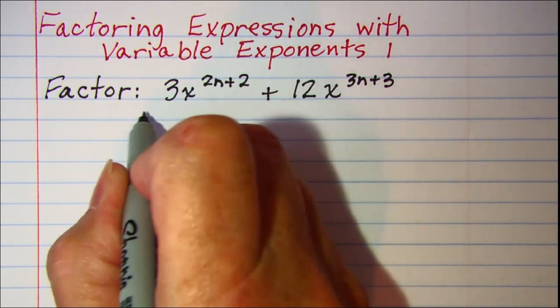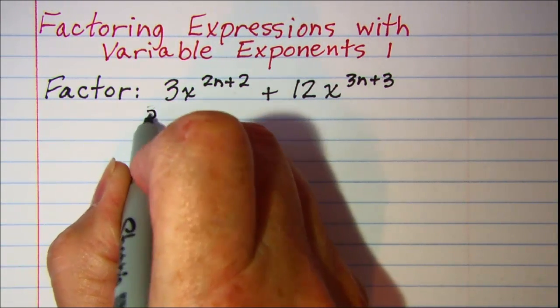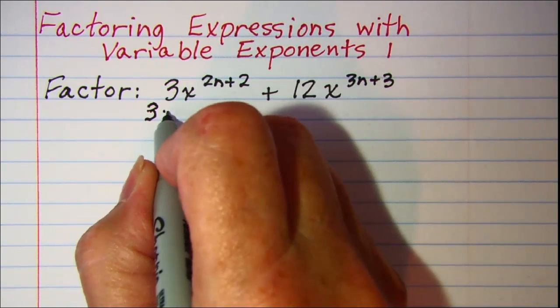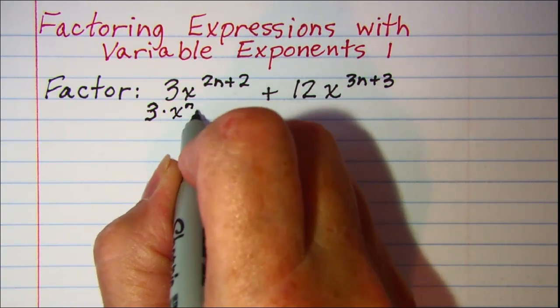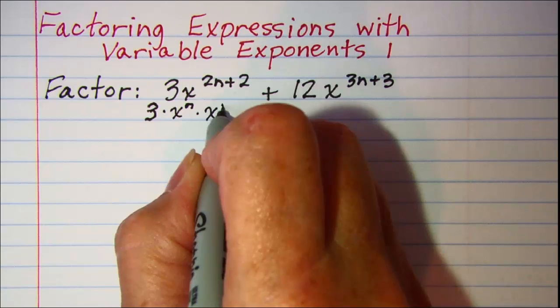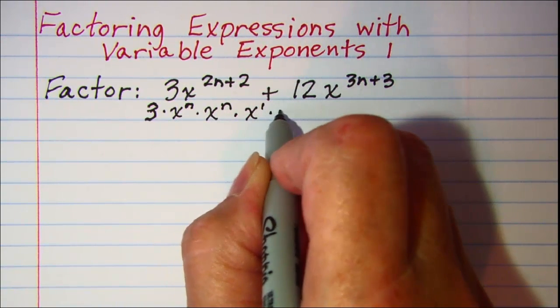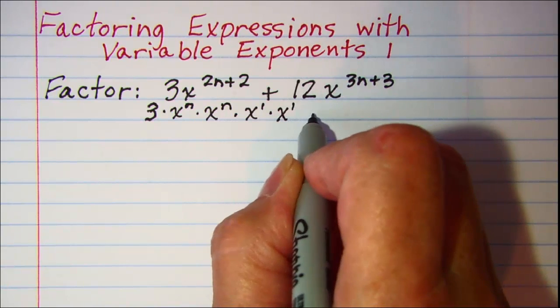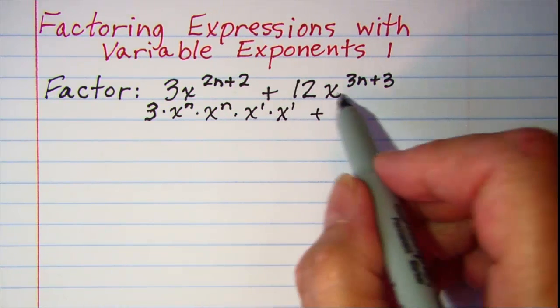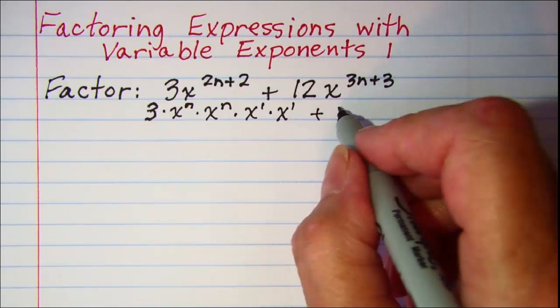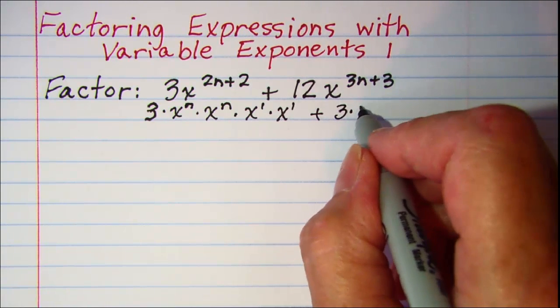This first term is the same as 3 times x to the n times x to the n times x to the 1 times x to the 1, and then the 12 is the same as 3 times 4.